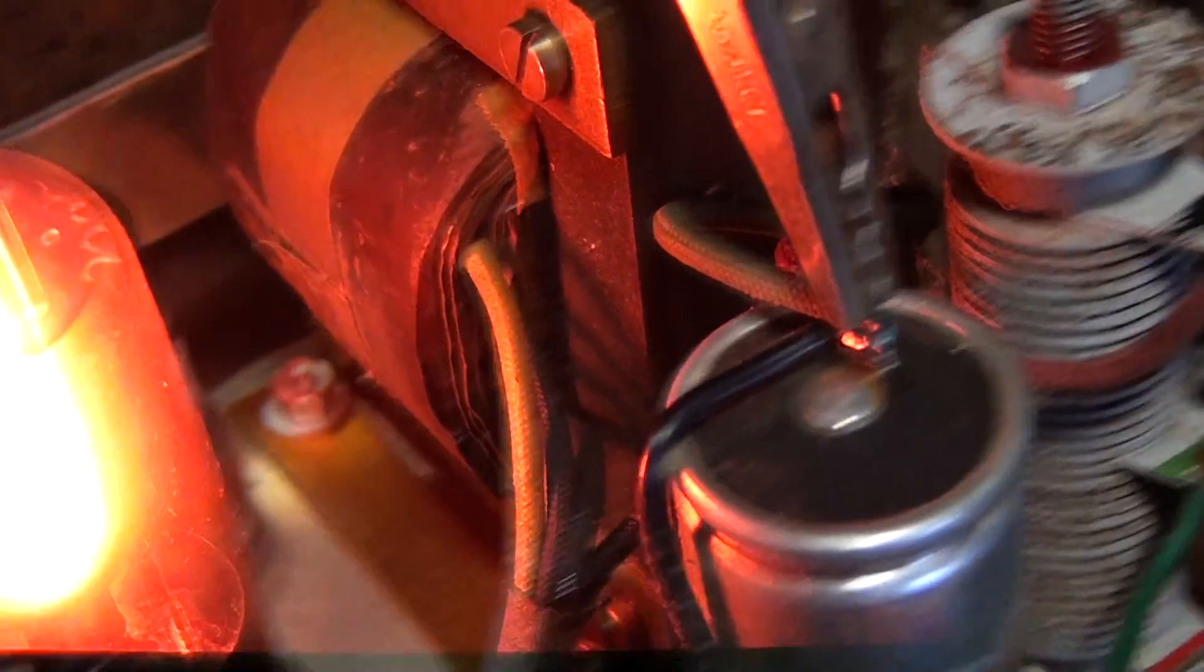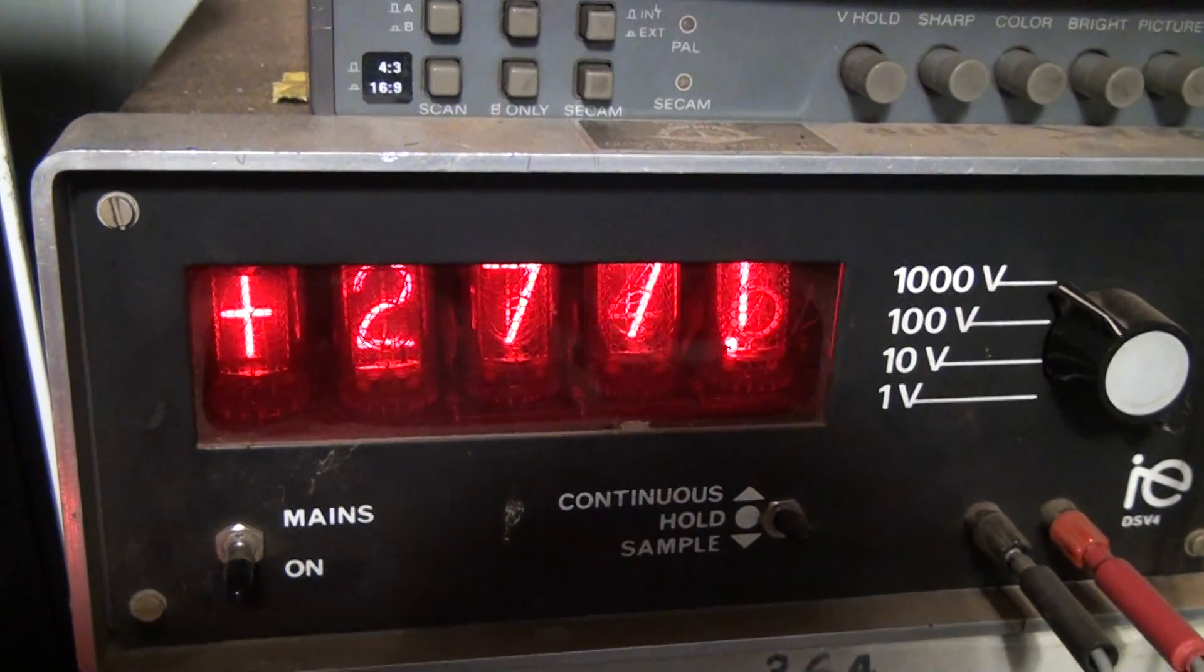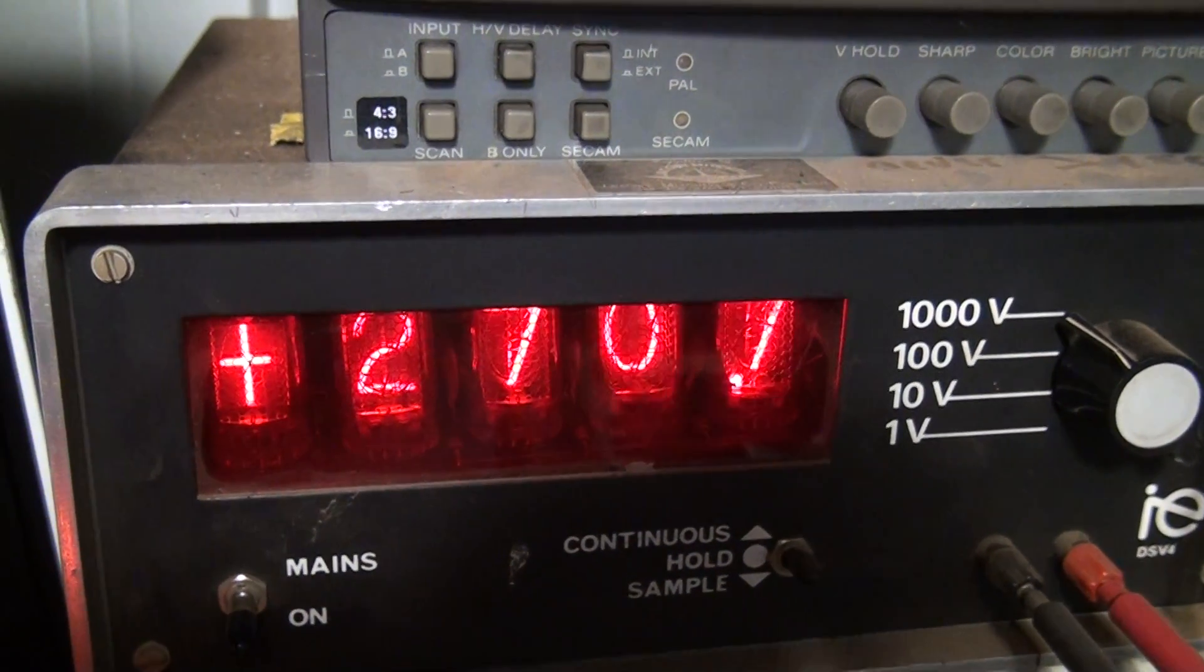The voltage across that capacitor there - just go up to the meter - there it is. It's about 270 odd volts while the tube's running.